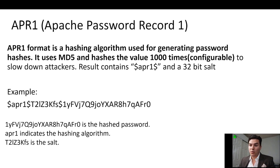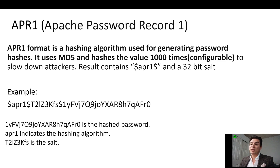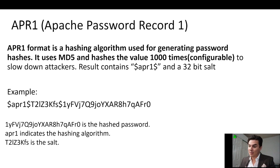APR1, Apache Password Recovery 1, is a hashing algorithm used for generating password hashes. It uses MD5 and hashes that value about a thousand times. It is configurable in order to slow down attackers — it just keeps hashing the hash value a thousand times, making it a very slow process.